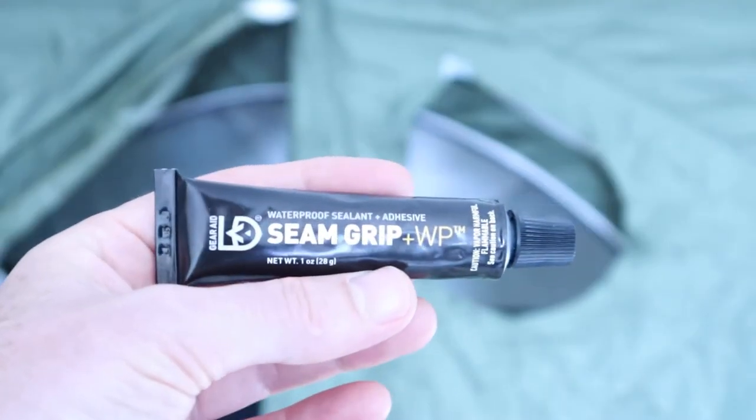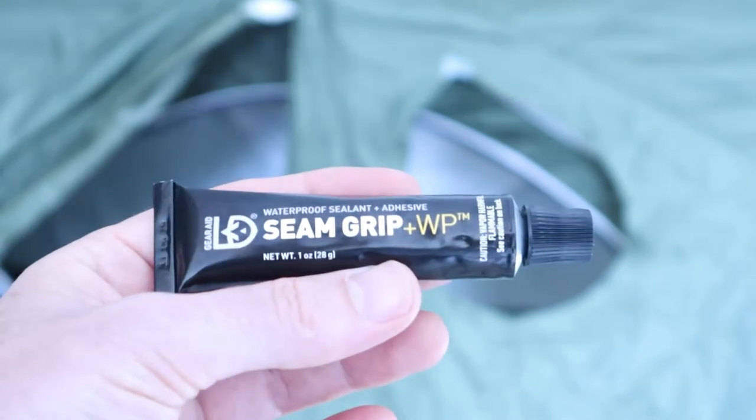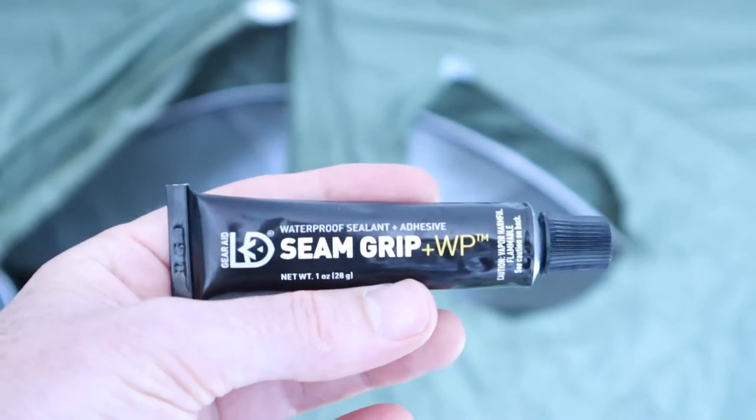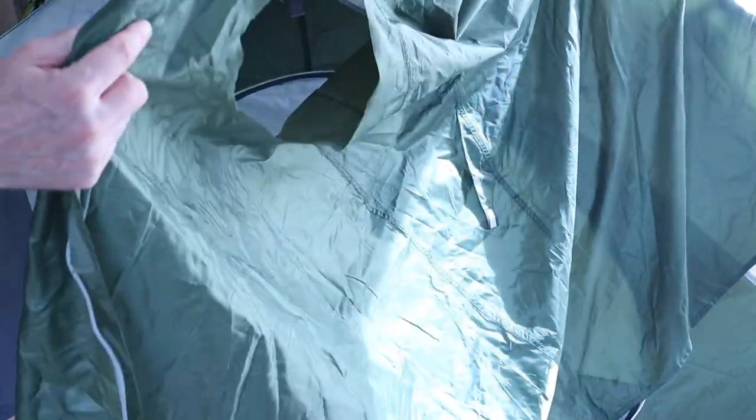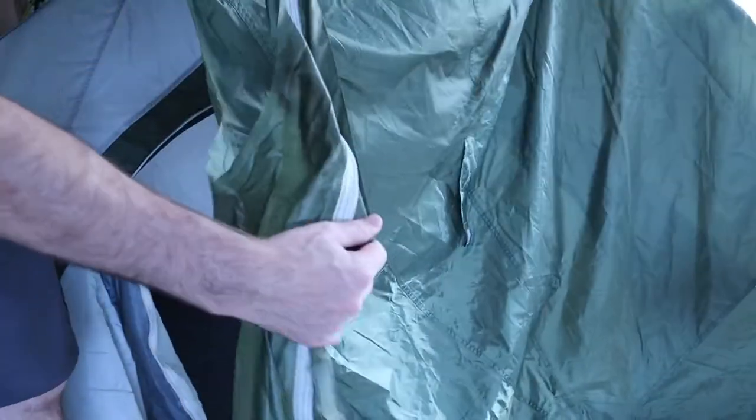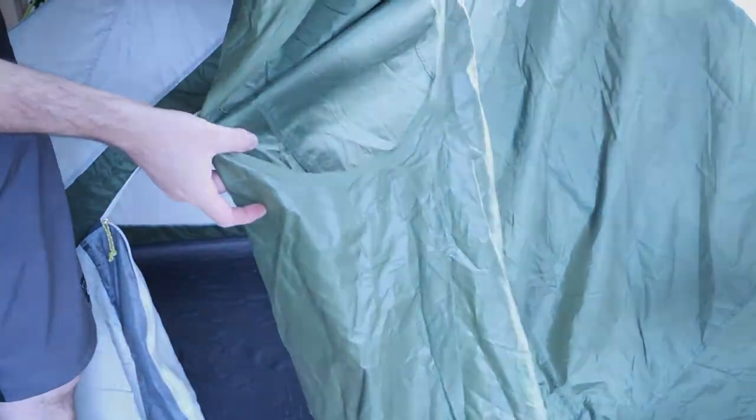SeamGrip Plus WP is a clear waterproof adhesive sealant, especially made for binding tears in tents, tarps, awnings and is suited for use on nylon, canvas, vinyl, polyester, most fabrics, PVC, plastic, neoprene and leather.